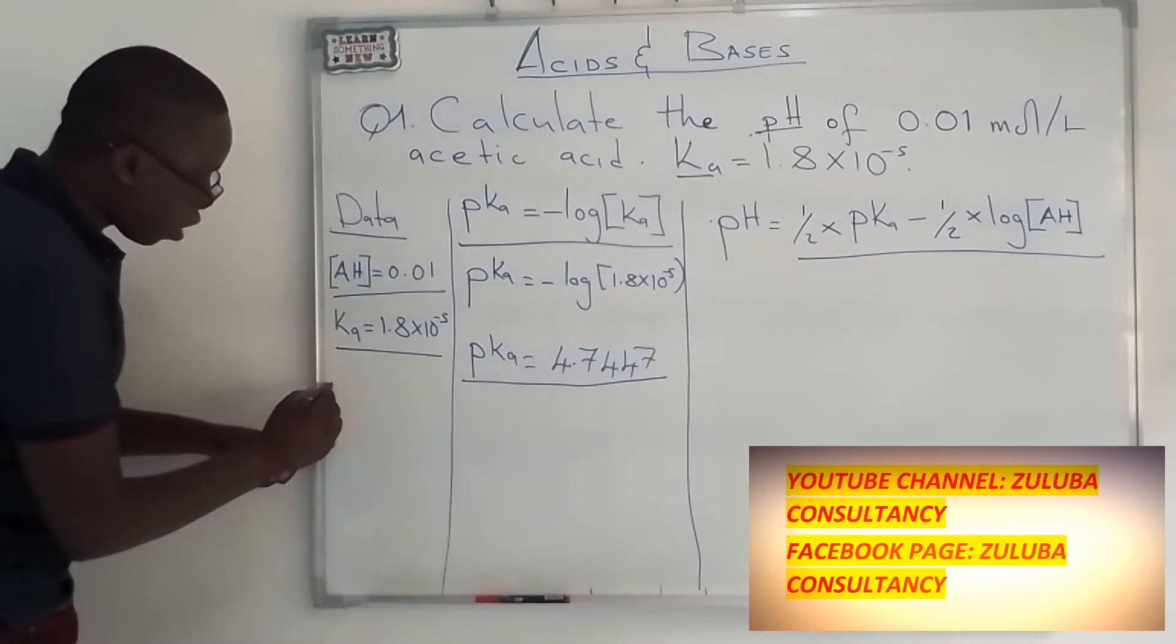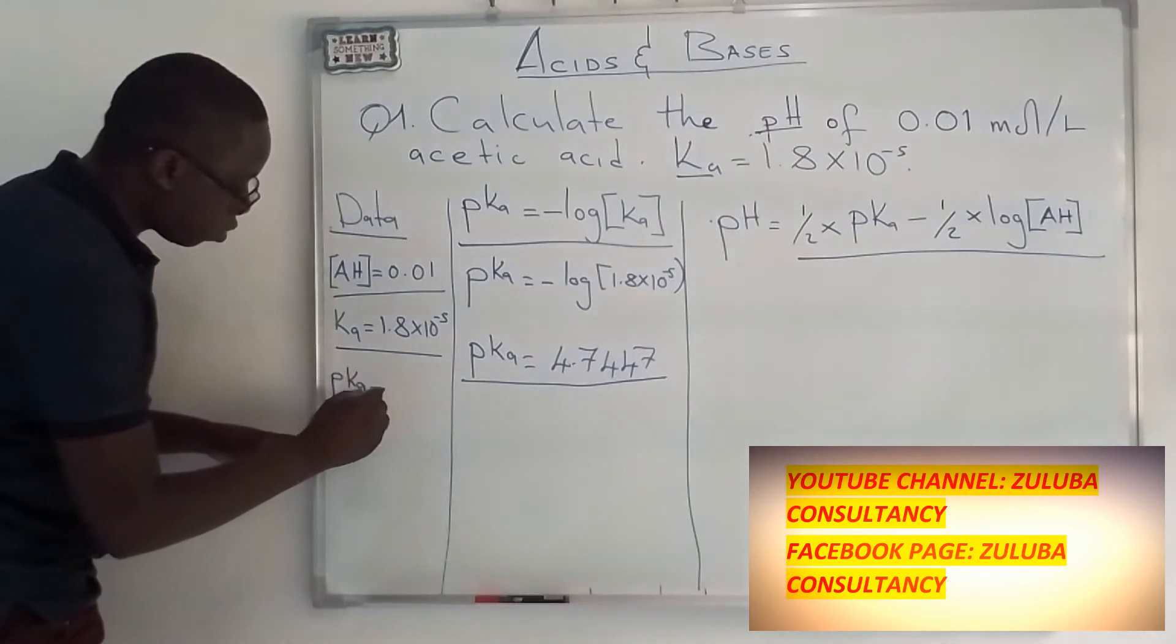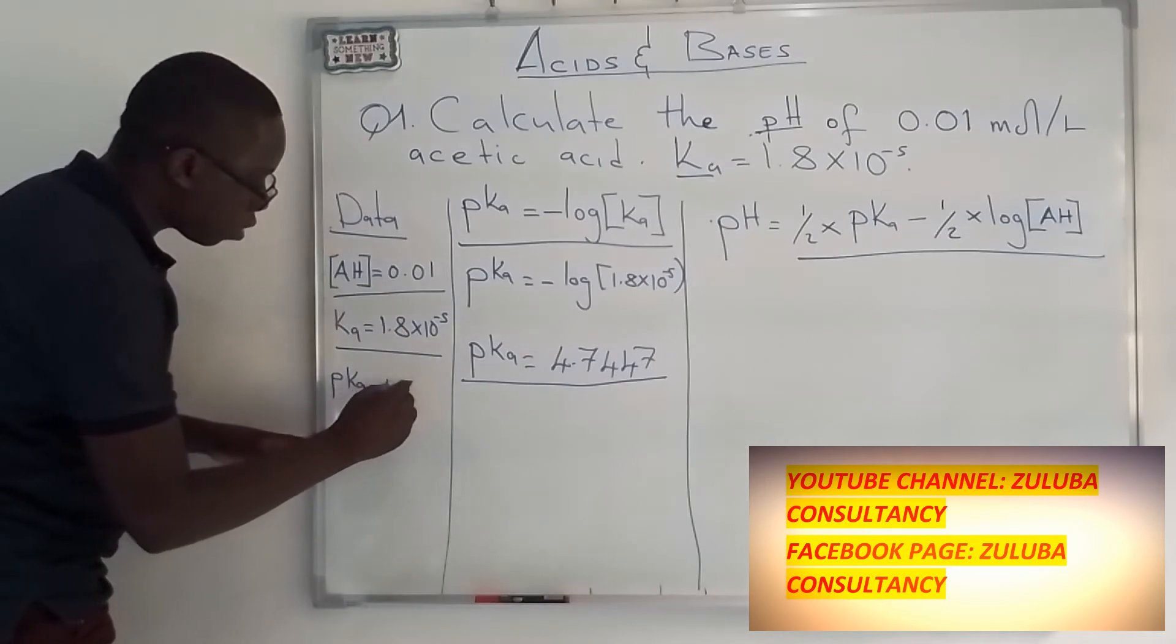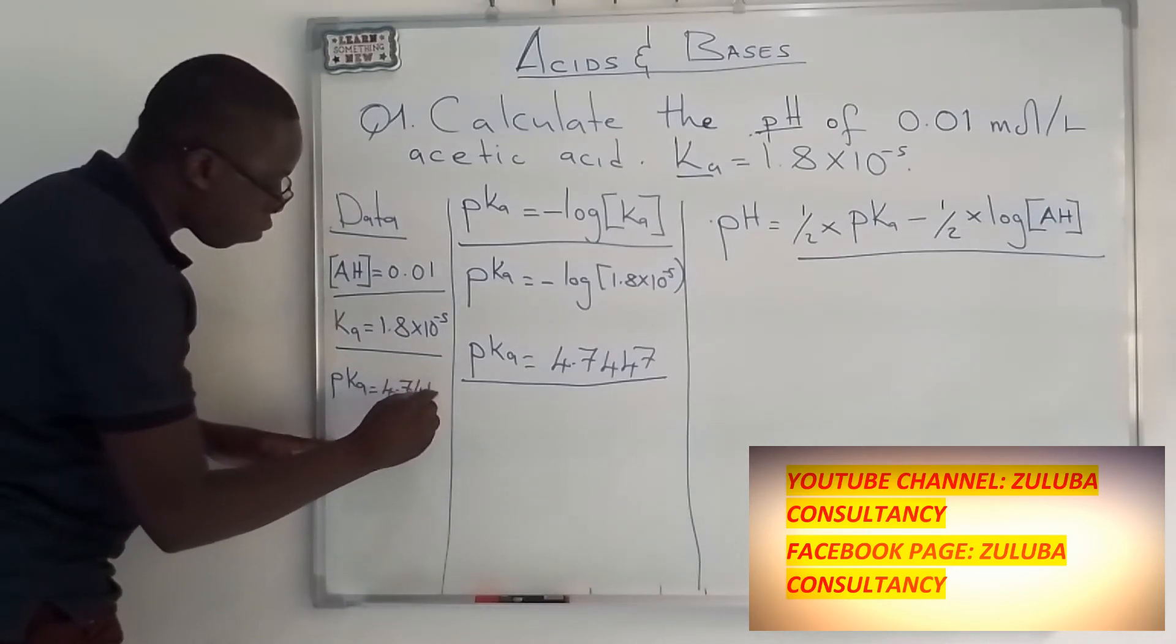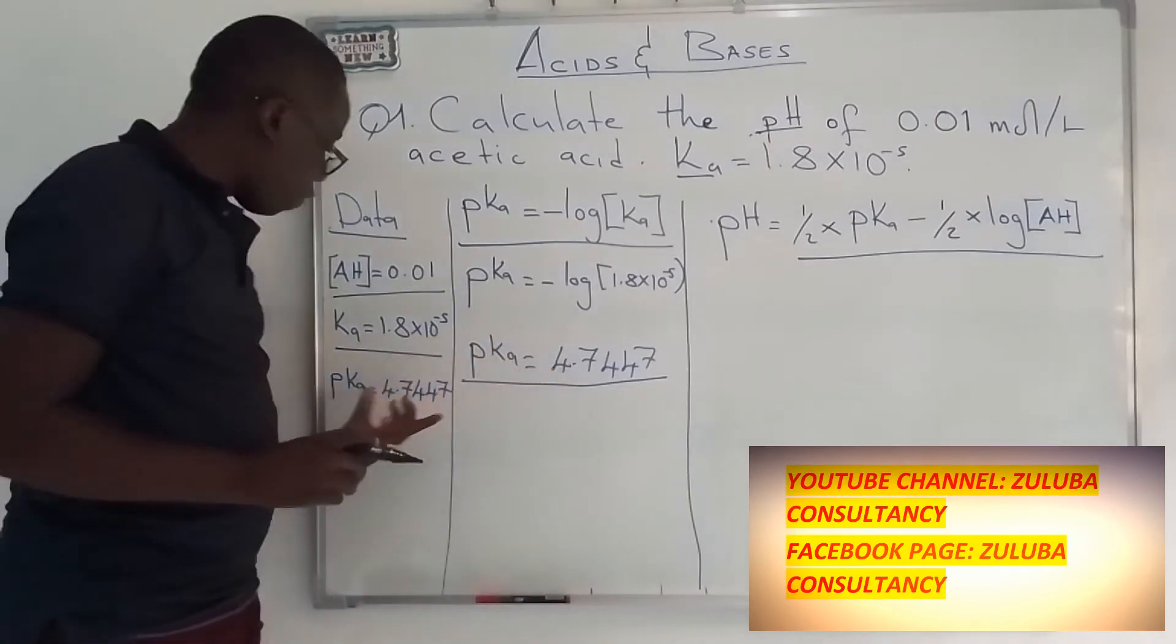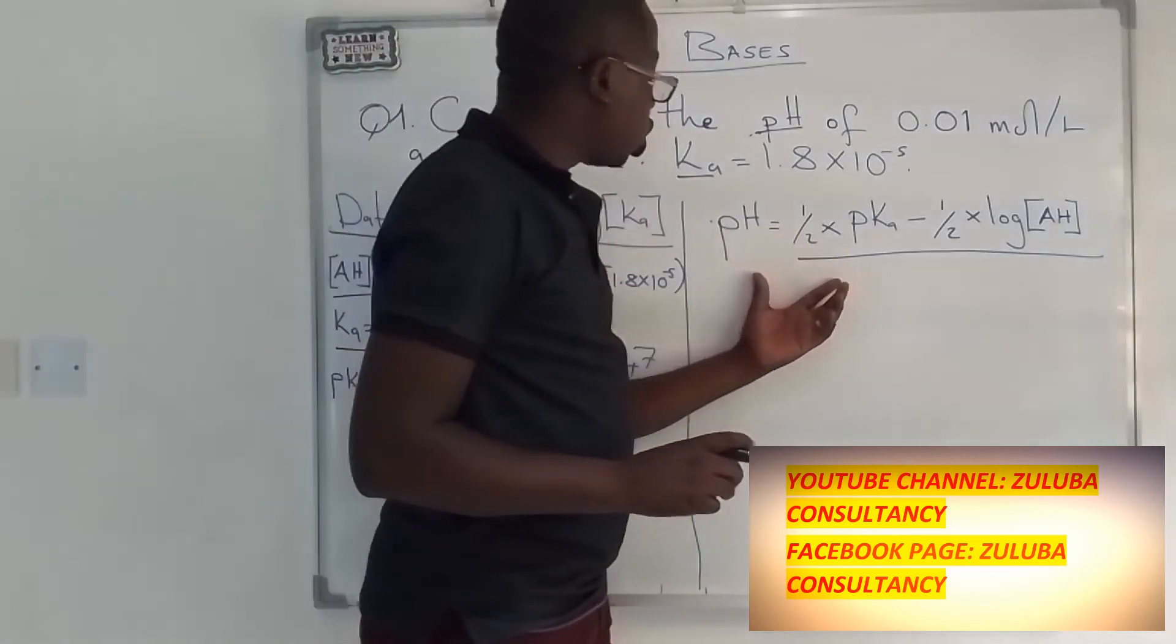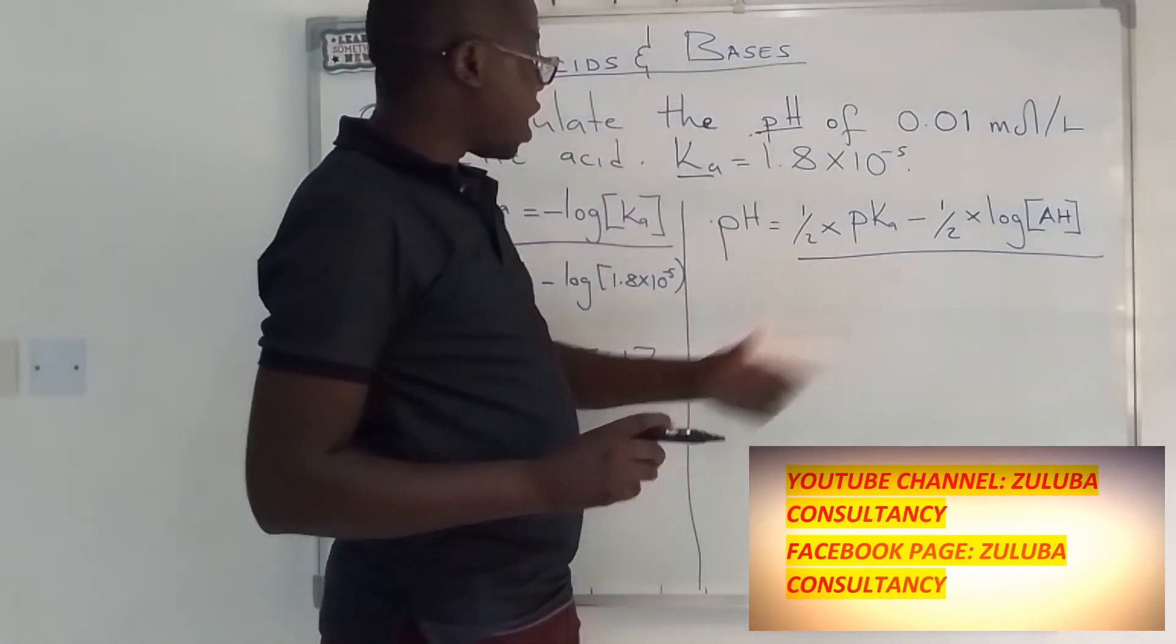And we can put this in our information that we have. We have now pKa is equal to 4.7447. Now that we have this value, we can now use the second formula to find the pH.